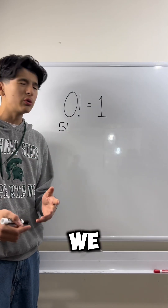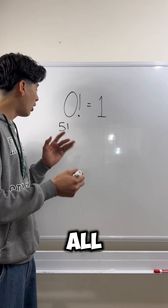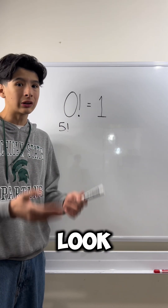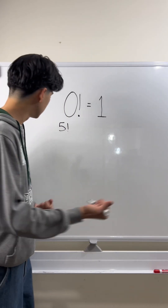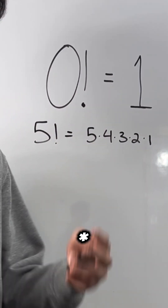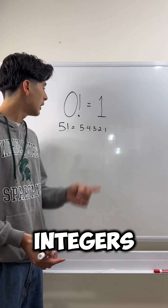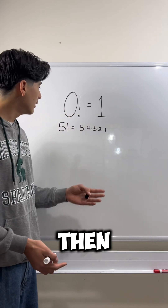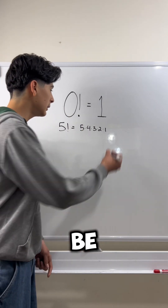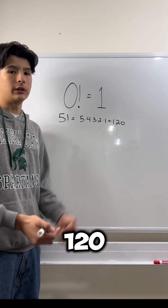Here's an example of how we would find a factorial. 5 factorial would just be all the numbers before 5 multiplied together. So it would look like 5 times 4 times 3 times 2 times 1. Note that this is only true for positive integers. Then we could just multiply it out, and that would be 120. So, 5 factorial equals 120.